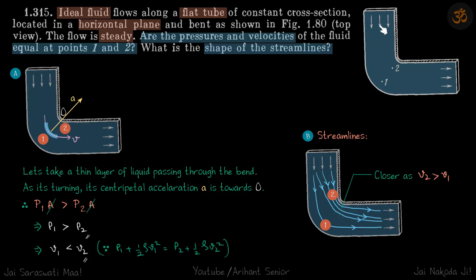We have some liquid passing through a bend in a pipe. We need to tell which of these two points has higher or lower pressure, or if it will be equal. To discuss that, let's take an element of liquid between these two points, one and two. The liquid will be traveling like this.